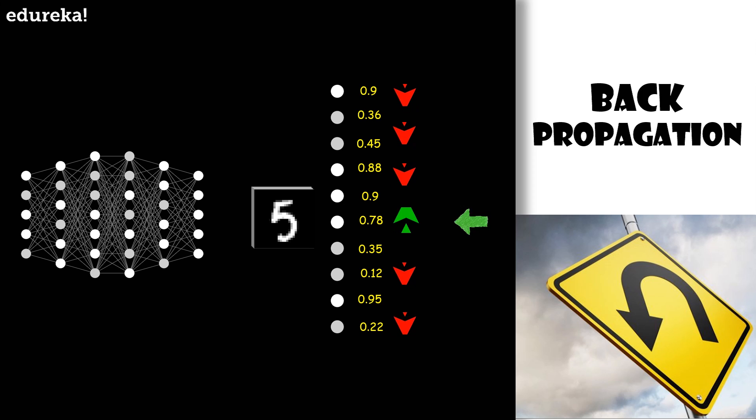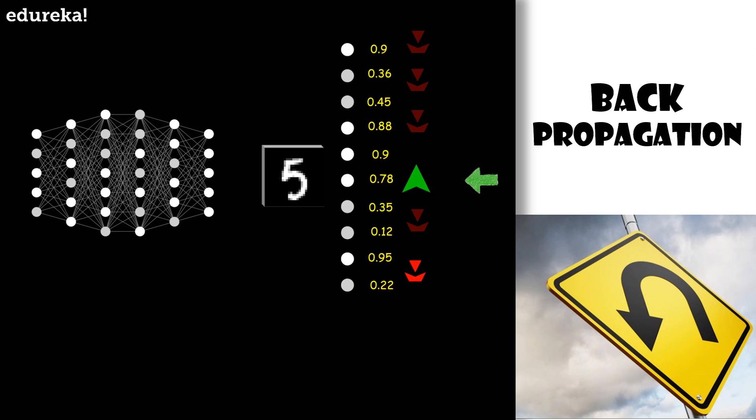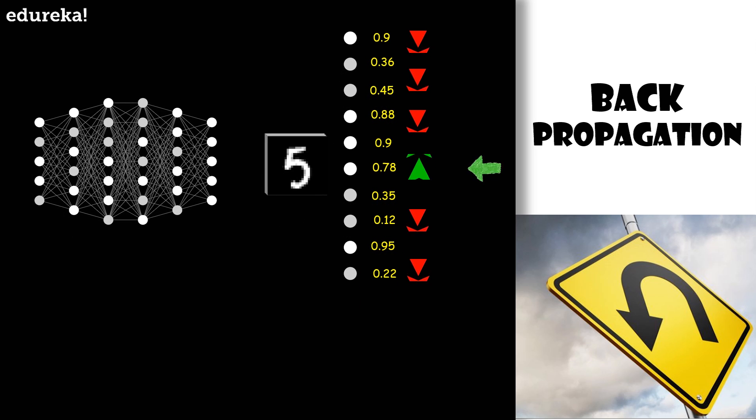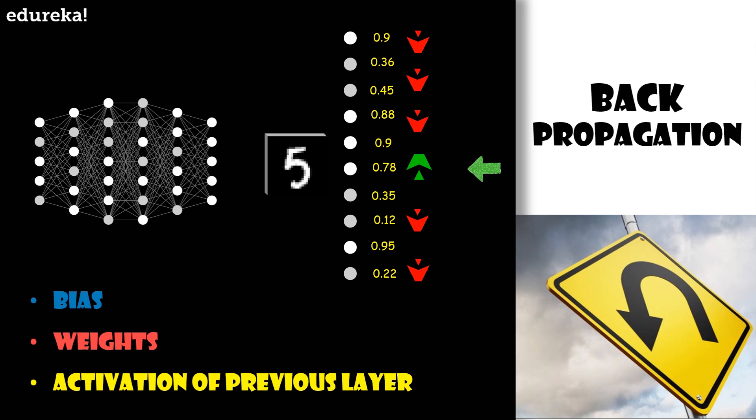We only have the influence on the weights and biases, but it is helpful to keep track of which adjustments we wish should take place to that output layer. Since we wanted to classify the image as a 5, we want the sixth value to get nudged up while all the others to get nudged down. Moreover, the size of these nudges should be proportional to how far each current value is from its target value. For example, the increase to that number 5 neuron activation is in a sense more important than the decrease to the number 7 neuron, which is already pretty close to the 0 mark. So there are three different parameters that can team up together to help increase the activation: you can increase the bias, you can increase the weights, and you can change the activation from the previous layer. Now of course we cannot influence those activations. We only have control over the weights and biases.